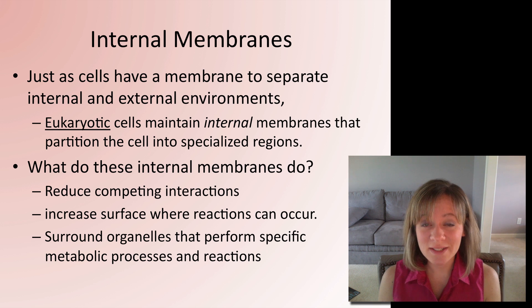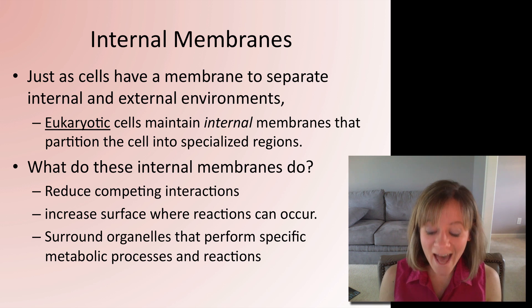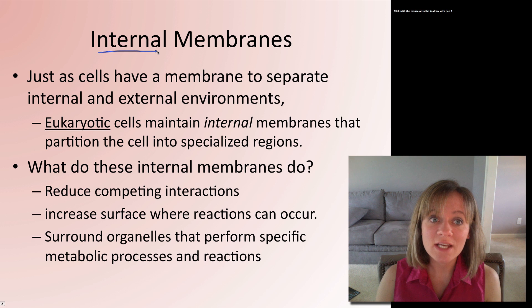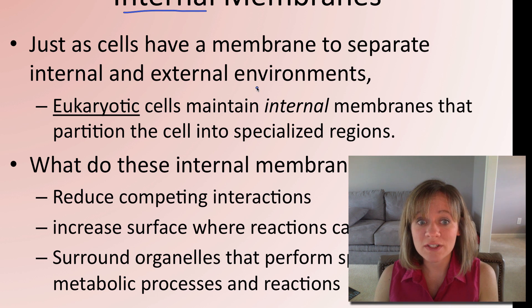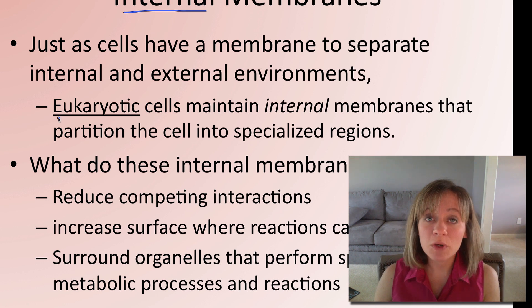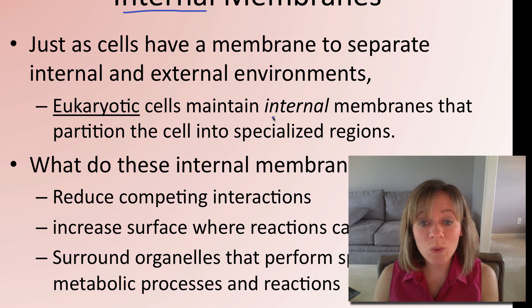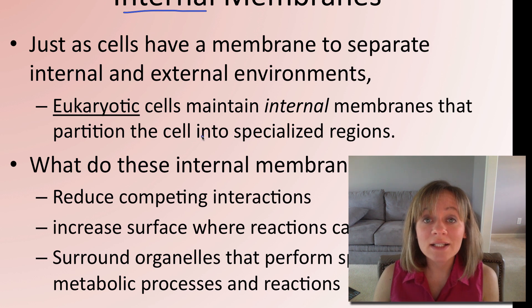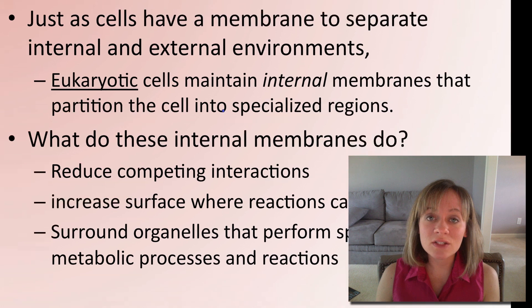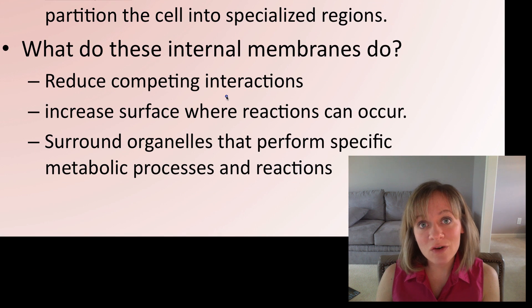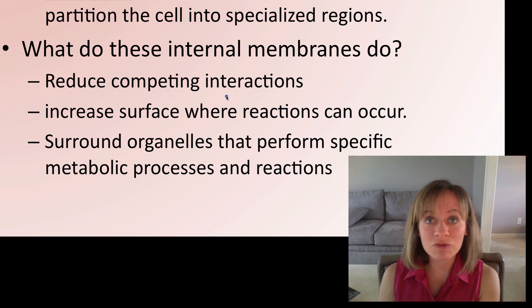One really important feature of cells is they have internal membranes. Just as we looked at the phospholipid bilayer of the outside membrane that separates the internal and external environment for the cell, eukaryotes — not prokaryotes — have internal membranes as well that partition the cell into specialized regions. We have this compartmentalization of specialized regions. Three really important things these internal membranes do: they reduce competing interactions, separating interactions from one another so that no mix-ups occur.